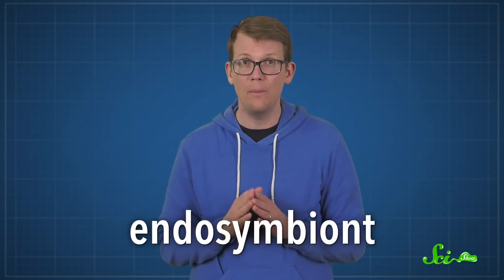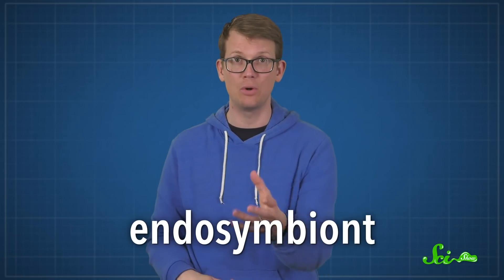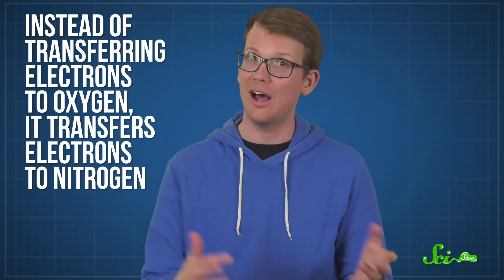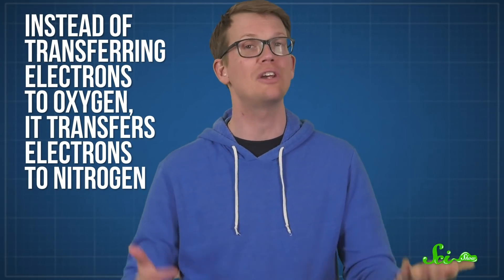They have an endosymbiont, a little buddy that lives inside them that performs functions that keep them alive. This inner partner does the same job as mitochondria, only instead of transferring electrons to oxygen, it transfers electrons to nitrogen. The partnership is so successful that researchers think it's been around for two or three hundred million years. We know of some organisms that can breathe nitrate, but it's very unusual to find one that doesn't also use O2.